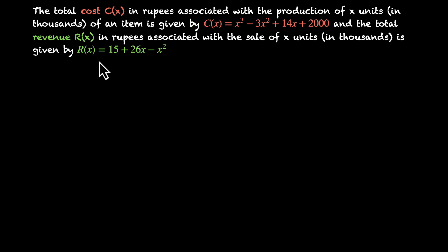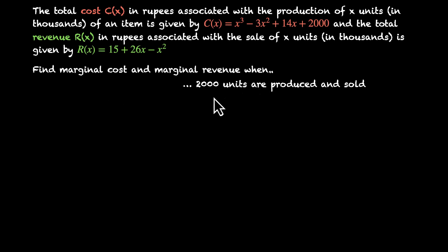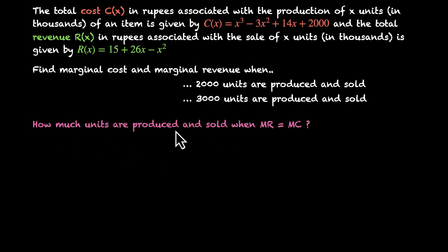We use R(x) to get the total revenue. But the question is not about total cost or total revenue — it's about marginal cost and marginal revenue, which are the incremental cost and incremental revenue. We need to find marginal cost and marginal revenue when producing and selling 2000 units and 3000 units. We also need to find how many units are produced and sold when marginal revenue equals marginal cost.